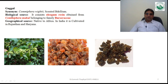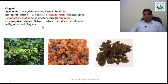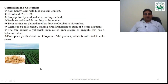The next drug is guggul, commonly known as scented myrrh or Commiphora wightii. Biologically, it consists of an oleogum resin obtained from Commiphora mukul, belonging to the family Burseraceae. Geographically, it is native to Africa; in India it is commonly cultivated in Rajasthan, Haryana, and Gujarat.